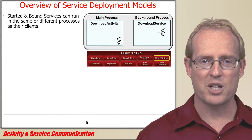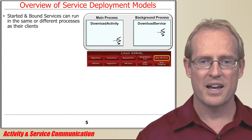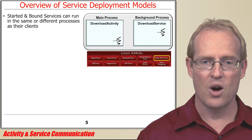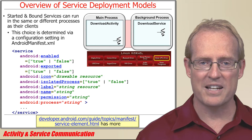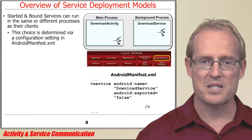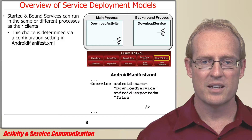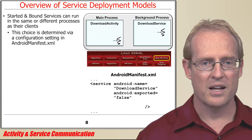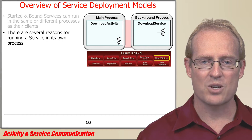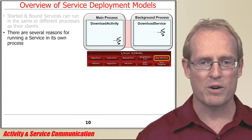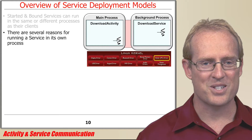Before covering these communication mechanisms and frameworks, we'll first delve deeper into the deployment model of started and bound services, which can be configured to run in the same process or in different processes than their clients based on the process element setting in an Android manifest XML file as shown here. By default, services run in the same process as other components in an application. To deploy a service in a separate process, the process element must be added to the Android manifest file. Although running activities and services in the same process is the most common deployment model for Android applications, there are several reasons for running a service in its own process, as discussed here.